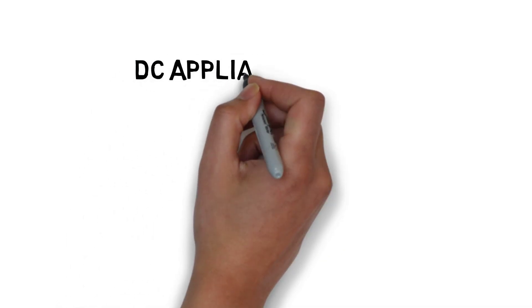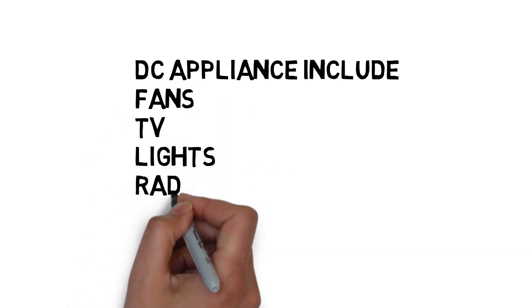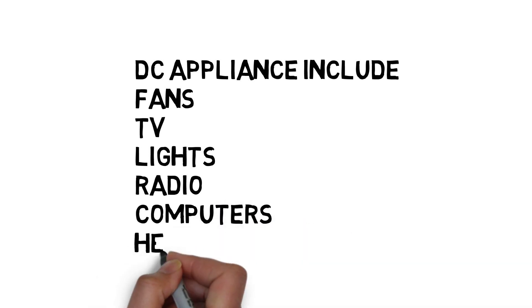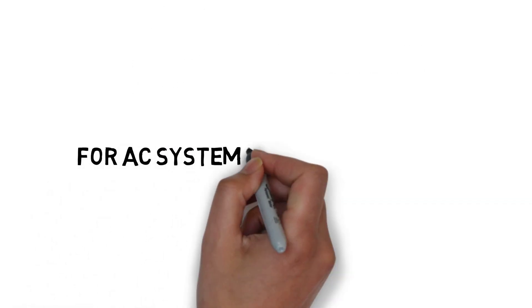It should be noted that contrary to popular belief, a lot of appliances are available that run on 12-volt DC current. Most electronic devices are in fact DC based. Televisions can be bought with DC input, and so can fans, refrigeration devices, lighting, and even heating devices. Using the DC output of the panels with DC appliances eliminates the need for an inverter. An inverter is a device that converts DC electricity to AC.